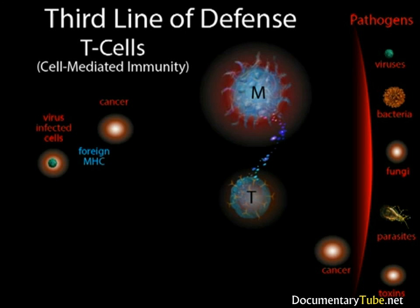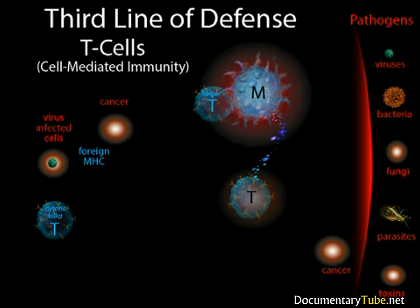T cells divide and specialize into different types. Cytotoxic T cells puncture any cell in the body that is infected with viruses or is cancerous. Helper T cells connect to the macrophages via a major histocompatibility complex and greatly increase the rate of cell division of all lymphocytes, helping the defense system cope with more pathogens. The well-publicized disease known as AIDS, or Acquired Immune Deficiency Syndrome, is caused by the human immunodeficiency virus, HIV. This virus destroys helper T cells. As the population of helper T cells diminishes, pathogens which would normally not be able to get through the immune system are able to take hold, because B cells and cytotoxic T cells production is limited.